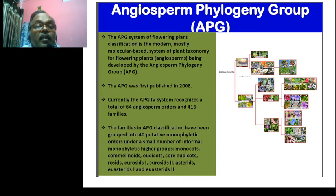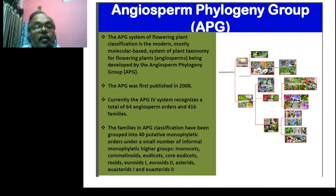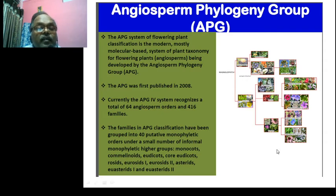Currently, APG's fourth system is recognized by the Angiosperm Phylogeny Group and includes 416 families. In this classification, there are four monophyletic orders and informal monophyletic groups and higher groups.